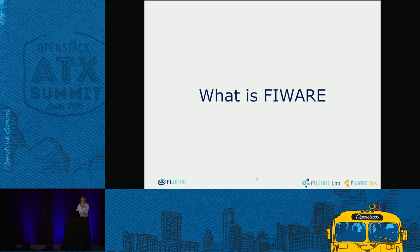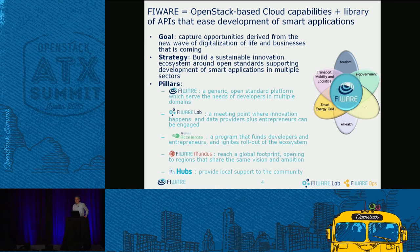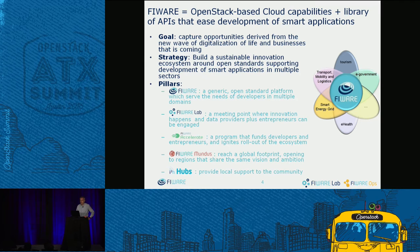What is FIWARE? In a nutshell, FIWARE is basically OpenStack - a cloud - plus a set of libraries and software building blocks, like Lego bricks, that expose APIs in order to help the development of smart, innovative, context-aware, and in particular data-intensive applications. The idea behind FIWARE is to create an ecosystem for innovation, helping developers, SMEs, and entrepreneurs to materialize their ideas into applications and make business out of them.